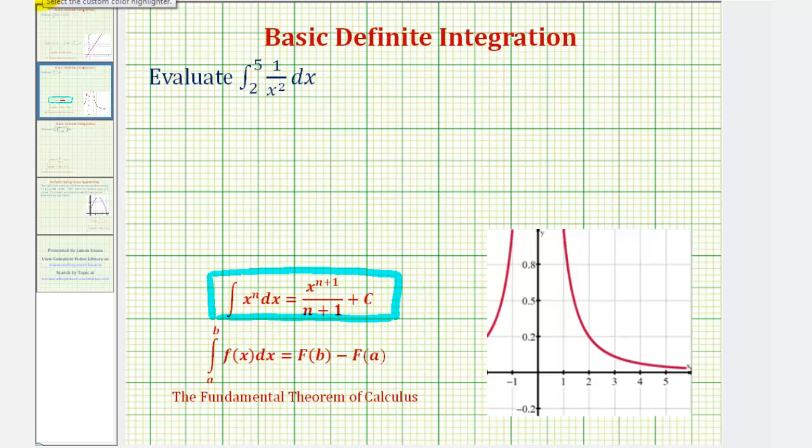Then once we find the antiderivative function, we can use the fundamental theorem of calculus stated here to determine the value of the definite integral. Where if big F of x is the antiderivative function, then big F of b, where b is the upper limit of integration, minus big F of a, where a is the lower limit of integration, is equal to the definite integral.